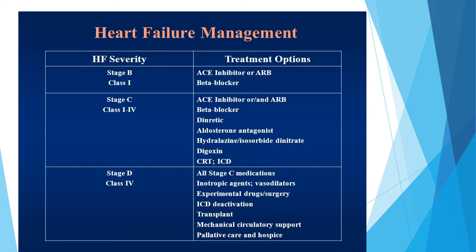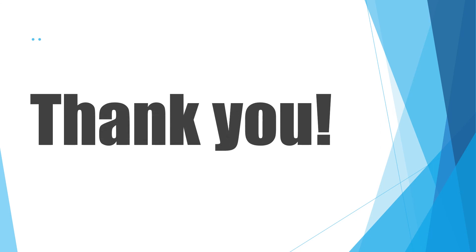When we manage a patient based on stage and class of heart failure: Stage B, Class 1 is treated with ACE inhibitors or angiotensin receptor blockers and beta-blockers because of their special effect on cardiac remodeling. Stage C, Classes 1 to 4, is treated with ACE inhibitors, angiotensin receptor blockers, beta-blockers, diuretics, aldosterone antagonists, and other treatments. Stage D, Class 4 is treated with all Stage C medications plus inotropic agents, vasodilators, other experimental drugs, and surgical treatment. This concludes the lesson on heart failure in children. Thank you for watching.